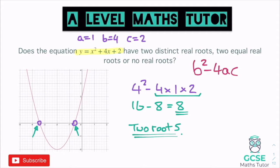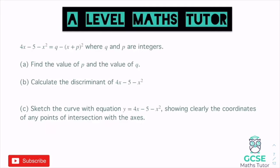So this question says 4x minus 5 minus x squared is equal to q minus the bracket x plus p squared, where q and p are integers. That is highlighting the fact that it can be written in completed square form like that. It says find the values of p and q, then calculate the discriminant, and then sketch the curve showing any points of intersection. So we'll have a look at those points step by step, starting with finding the values of p and q and writing it in this completed square form.